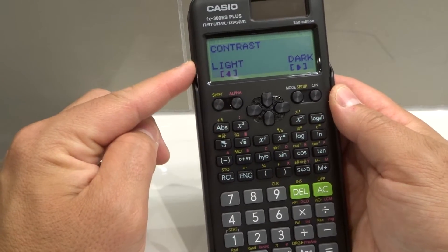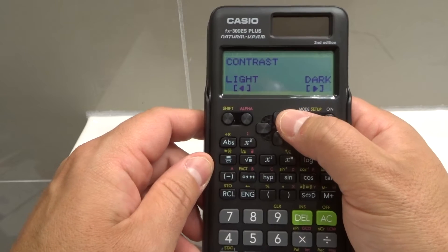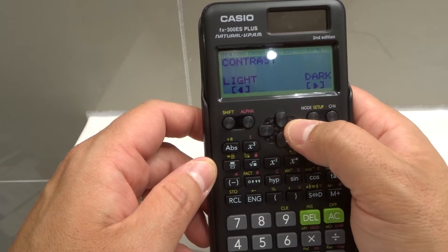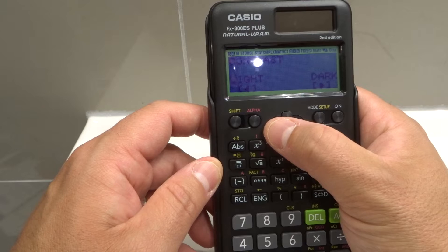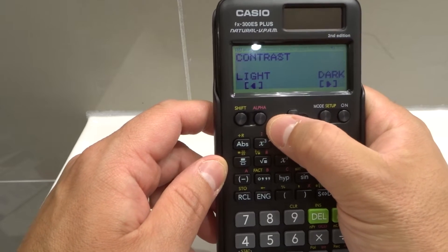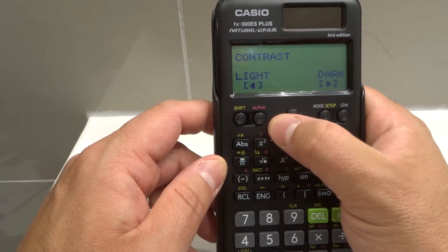Okay now it says contrast. If I want it to go darker, I push the right arrow just like this. So I can push the right arrow and as you can see it's getting darker. If I want it to go lighter, I push the left arrow and it's getting lighter just like that. You can continue going as light as you want.